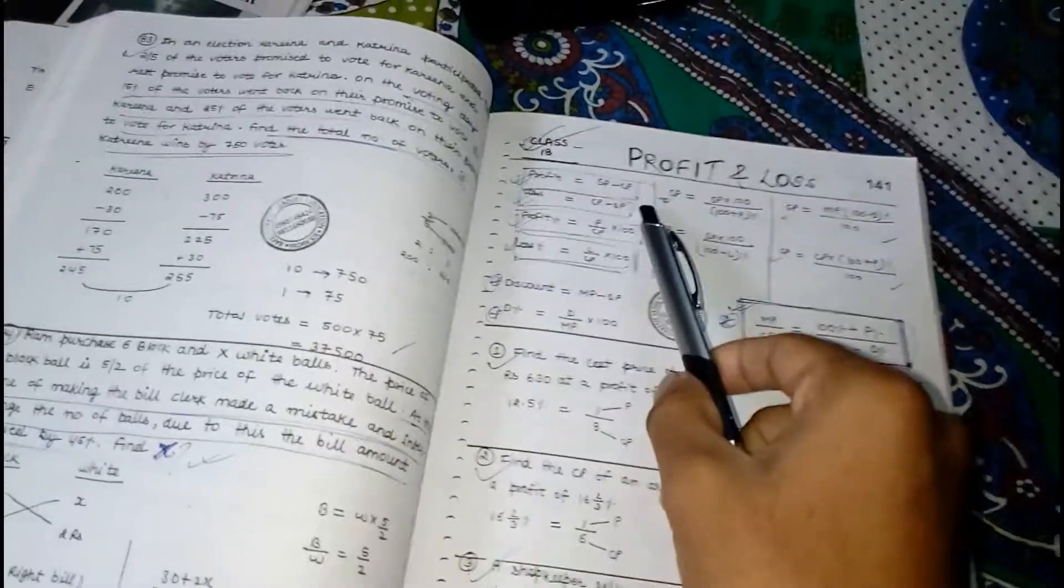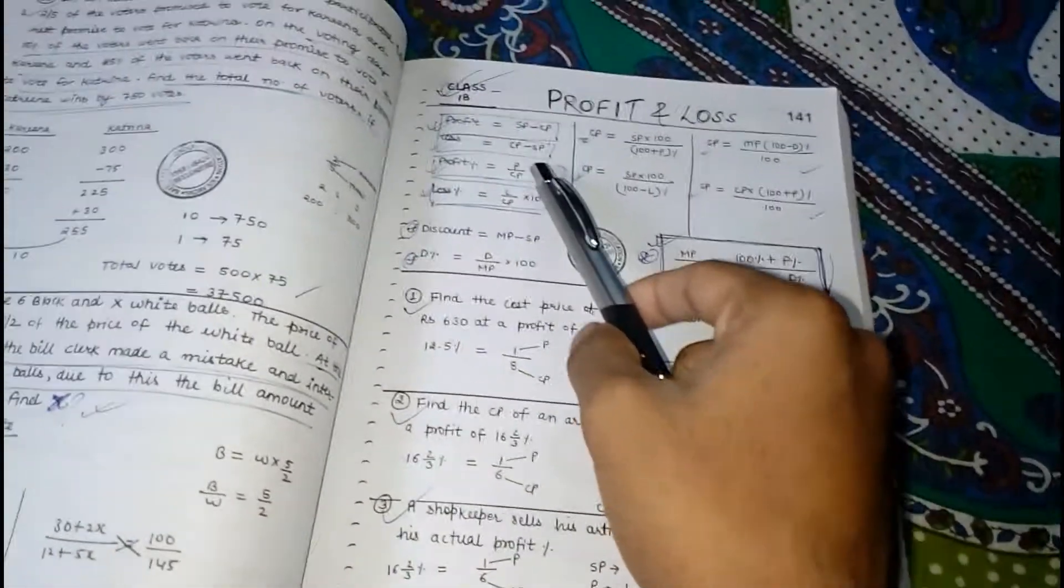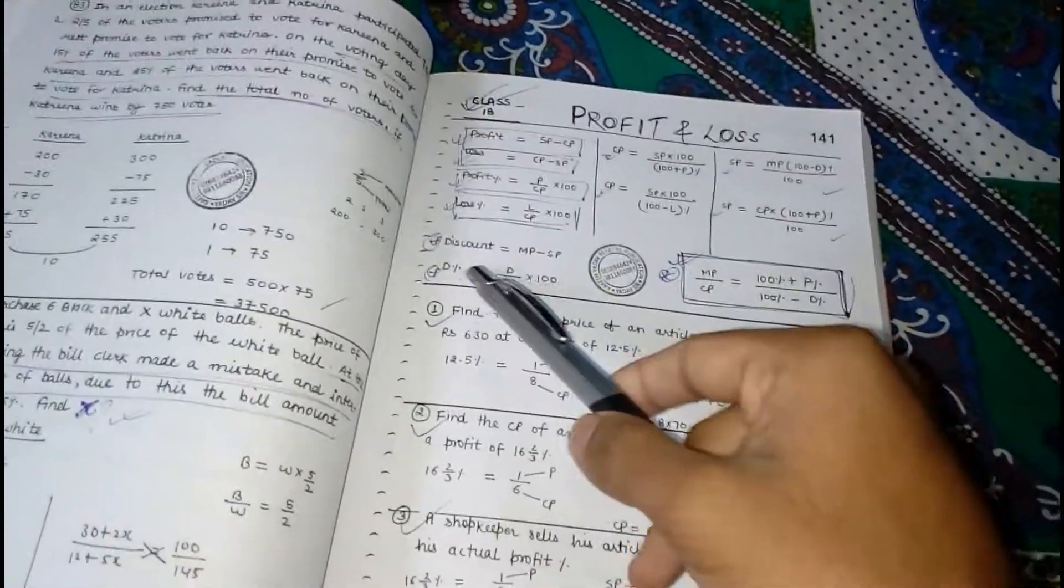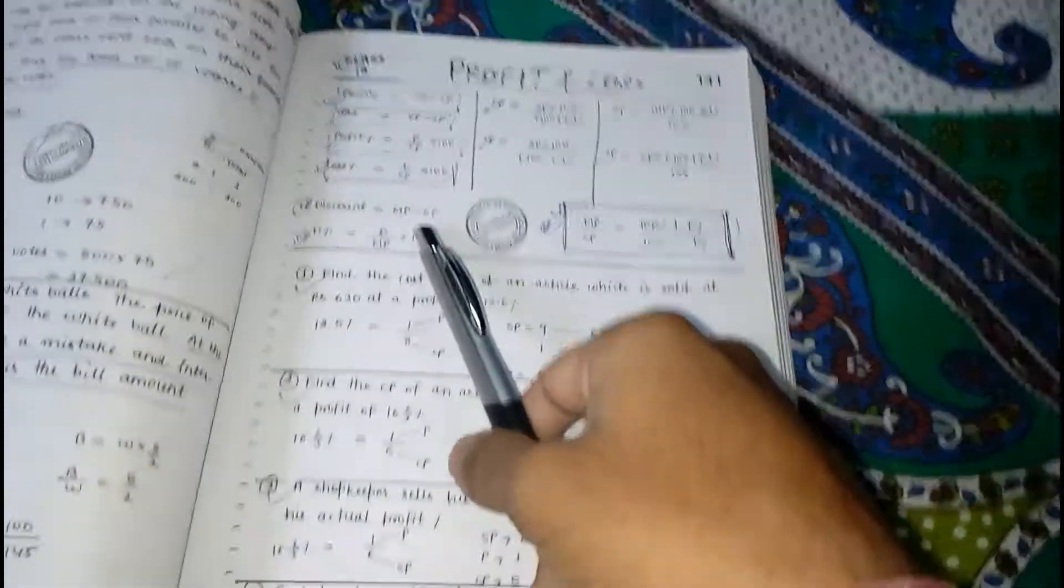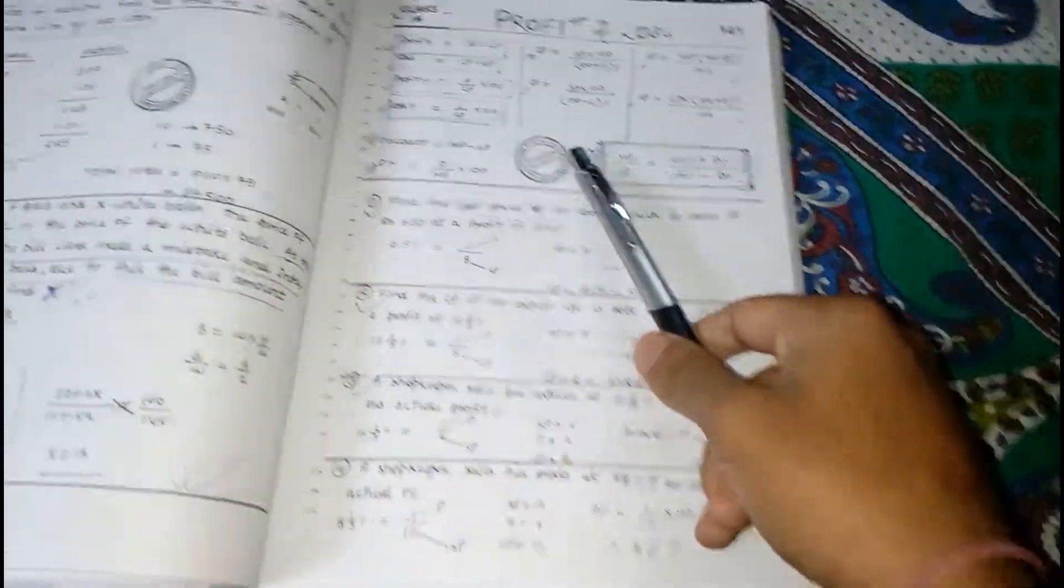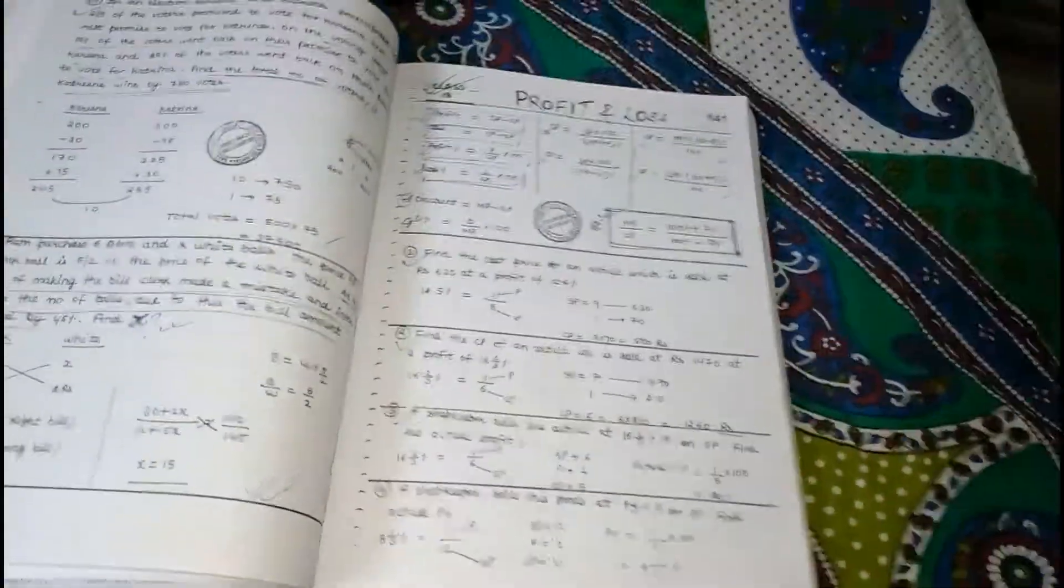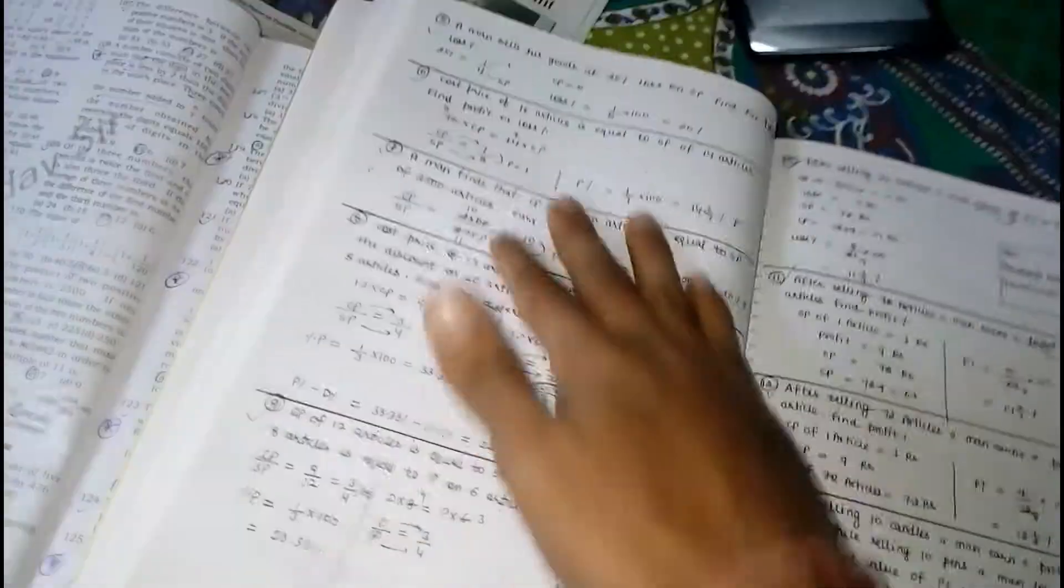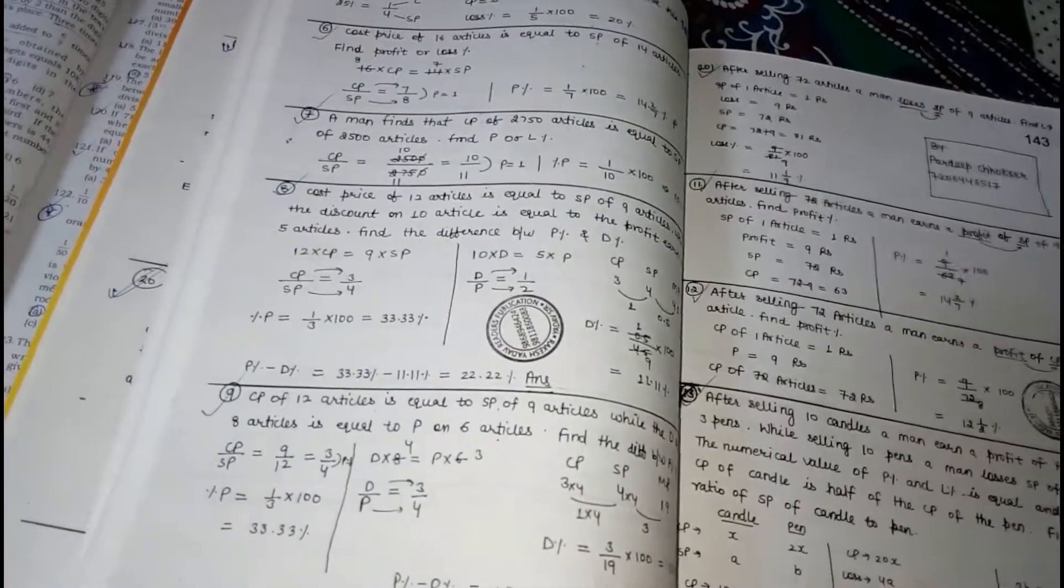If we move on to the profit and loss chapter, you can see here all the formulas has been given first, like profit is equal to SP minus CP, loss is equal to CP minus SP, all the formulas, discount is equal to MP minus SP. All the formulas and everything has been given first.